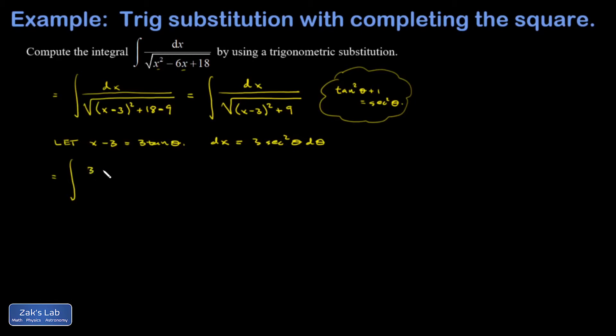I've got 3 sec² θ dθ over a square root of, when I square x - 3, I get 9 tan² θ, and then add 9 to that. We'll just clean things up a little bit as we go. When I factor a 9 out of the square root, I get a 3, but there's a 3 in the numerator, so all those constants cancel and I end up with tan² θ + 1 inside that square root.